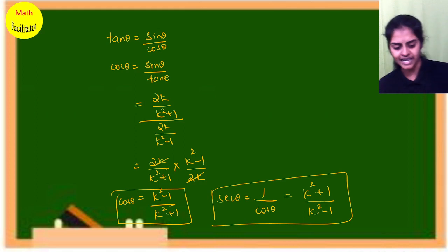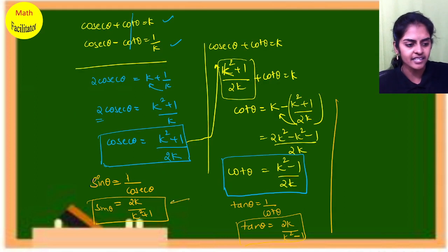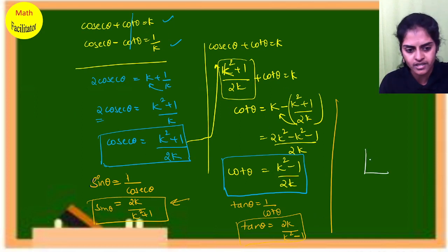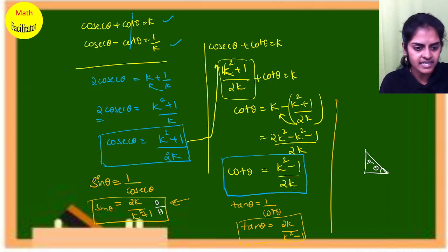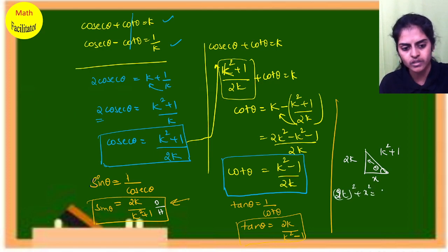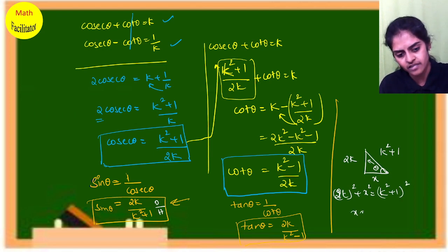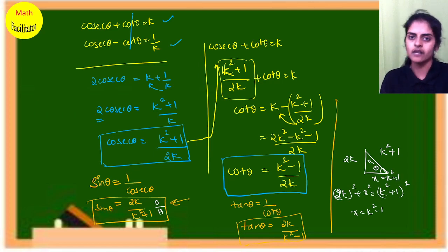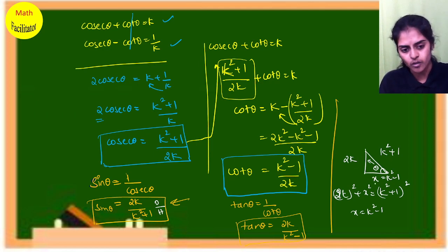That was method 1. For method 2, after finding sin θ, you can use Pythagoras theorem. Draw a right triangle with angle θ: opposite side = 2k, hypotenuse = k² + 1. Then (2k)² + x² = (k² + 1)², solving gives the adjacent side x = k² − 1. From there you can directly write all remaining ratios.